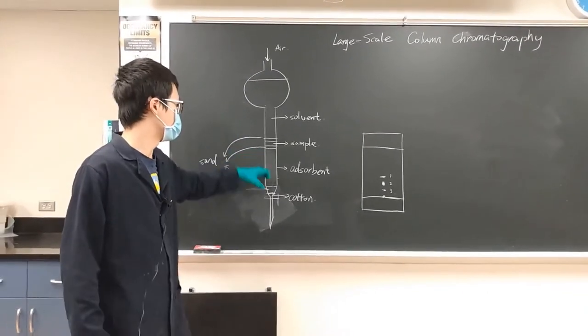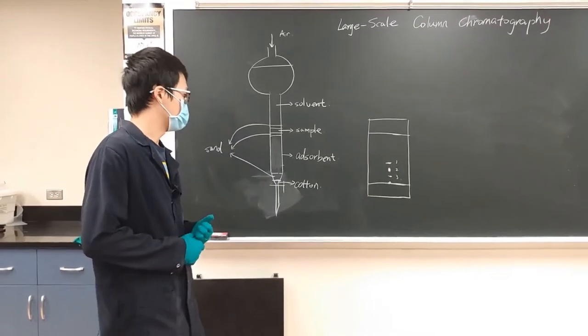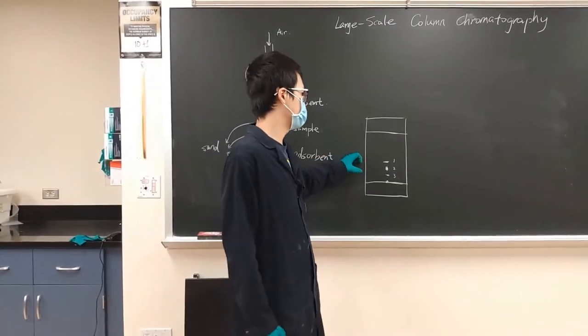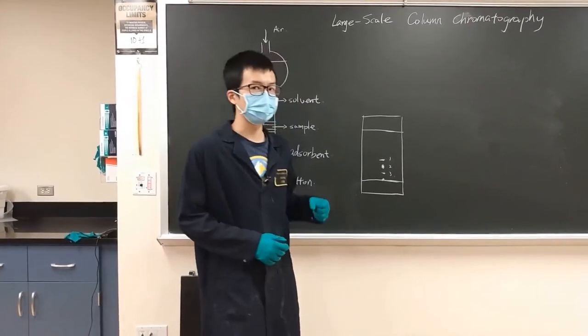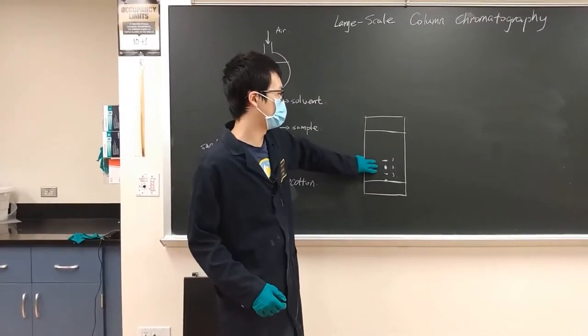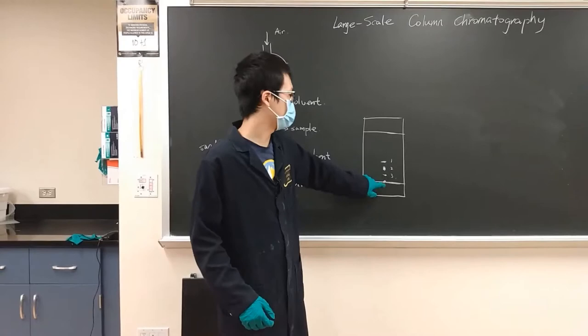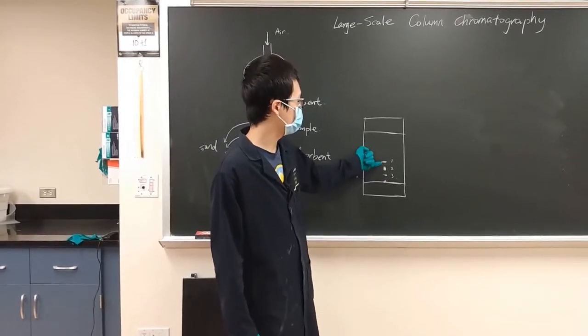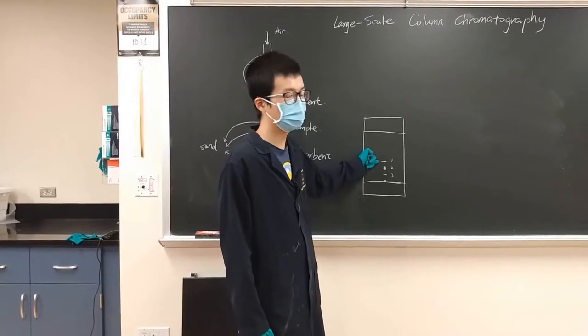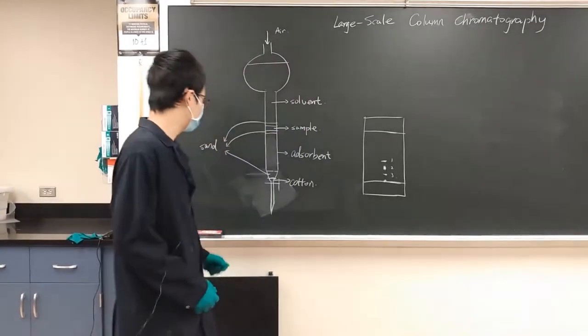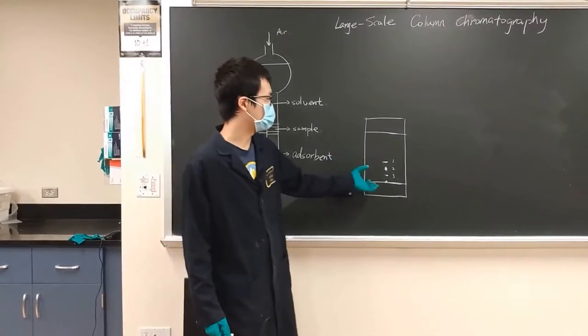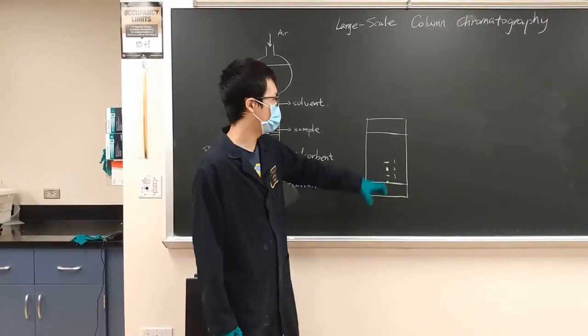Here is an example of a TLC. Let's assume we have three different compounds in the original spot. We got the most polar one as three, the middle one as two, and the least polar one as one.